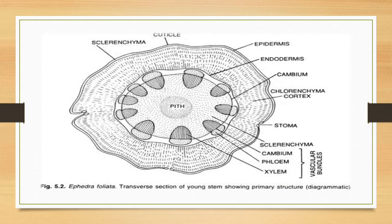You can observe in the diagram the pits, secondary growth, collenchyma cells, cuticle, epidermis, endodermis, cambium, stomata, xylem, phloem, and collenchyma cells.